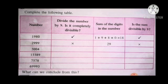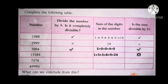Next, 2999: adding the digits gives 29. 29 is not divisible by 9, so 2999 is not divisible by 9. Next, 5004: 5 plus 0 plus 0 plus 4 equals 9. 9 is divisible by 9, so 5004 is divisible by 9. Next, 13389: 1 plus 3 plus 3 plus 8 plus 9 equals 24. 24 is not divisible by 9, so 13389 is not divisible by 9.